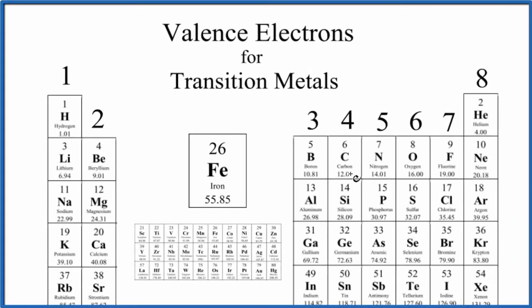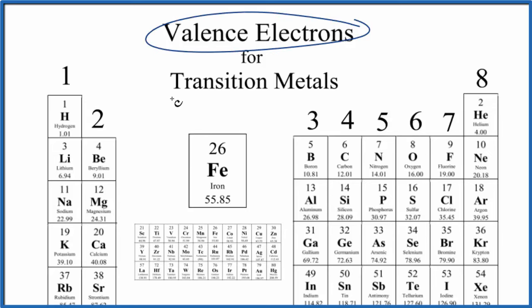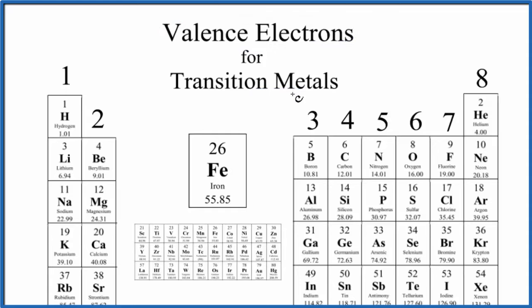One of the questions that comes up quite frequently in chemistry is how do we find valence electrons for transition metals? So in this video we'll talk about how to find the valence electrons for the transition metals. These are also called d-block elements.